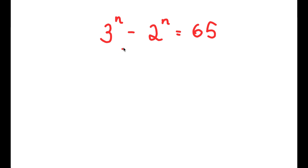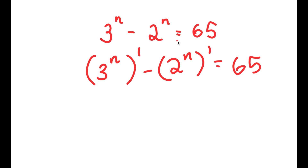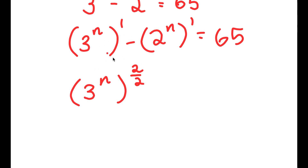In this problem, I have 3 to the power of n minus 2 to the power of n is equal to 65. To solve this, I'm going to start by rewriting 3 to the power of n as 3 to the power of n to the power of 1, and minus 2 to the power of n to the power of 1 equals 65. Anything to the power of 1 is itself. Now I'm going to rewrite 1 as 2 over 2, which is the same exact thing.